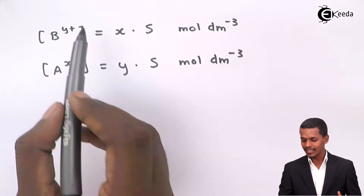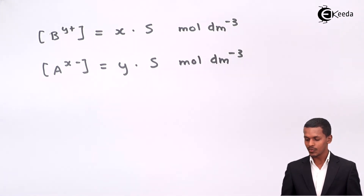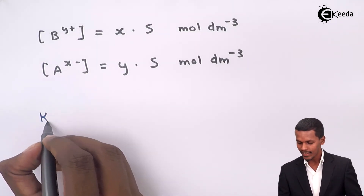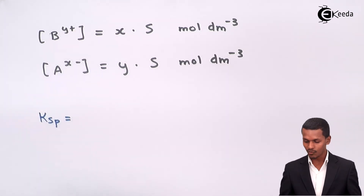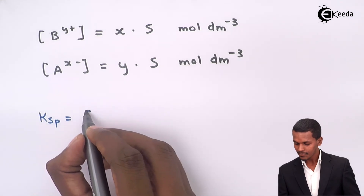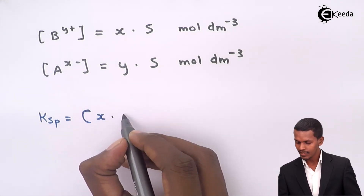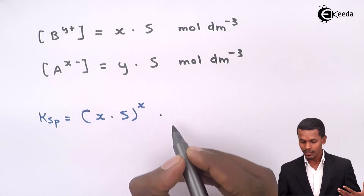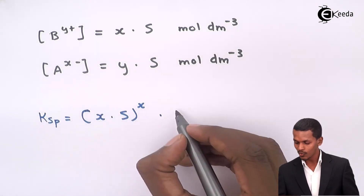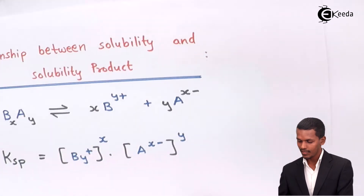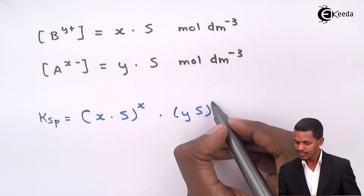So expressing this in terms of the K_sp equation, instead of concentrations I substitute: for B^(y+) I write (xs) raised to x, and for A^(x−) I write (ys) raised to y.